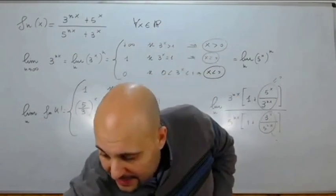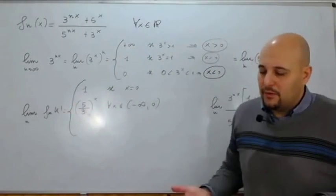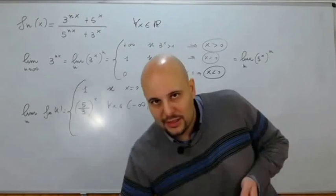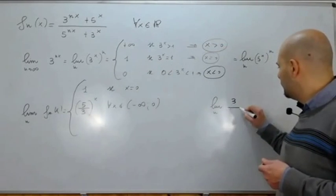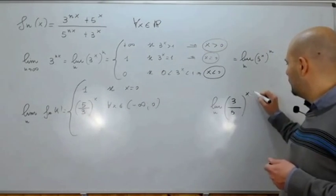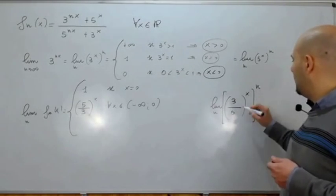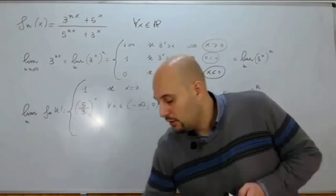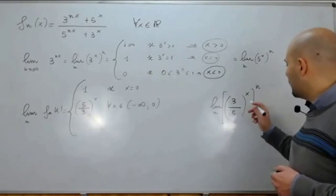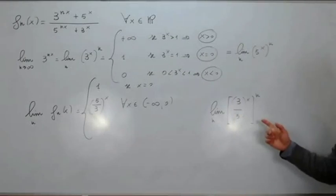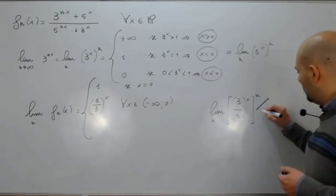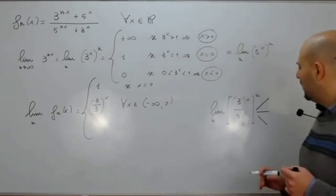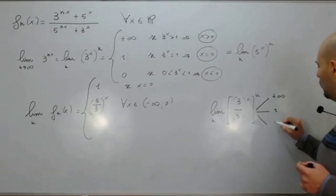Quello che ci rimane è il limite per n→∞ del rapporto fra 3^(nx) e 5^(nx), che essendo entrambi elevati alla n e alla x, si può scrivere come (3/5)^x tutto elevato alla n. Questo è un altro limite notevole per n→∞ di a^n, che vale +∞, 1, o 0.